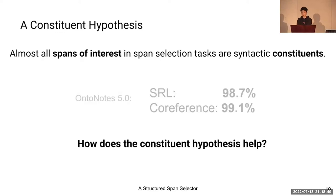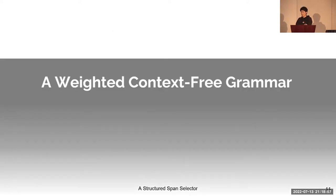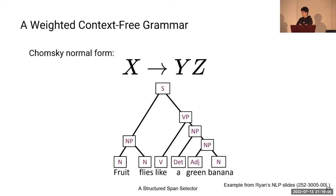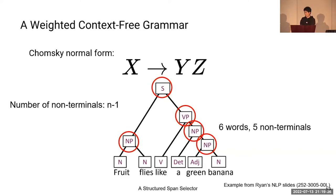Now that we have empirically verified this hypothesis, the first question we ask is: how does the constituent hypothesis help? The answer comes from the theory of context-free grammar. Here is a quick reminder of Chomsky's normal form. In Chomsky's normal form, each production rule has either two non-terminals or one single terminal on the right-hand side, so the resulting parse tree of every sentence is a binary tree. The number of non-terminals, i.e., the internal nodes, in each parse tree is n minus one, where n is the number of words. In this example, we have five non-terminals in the parse for a sentence of six words.